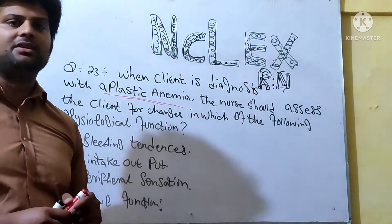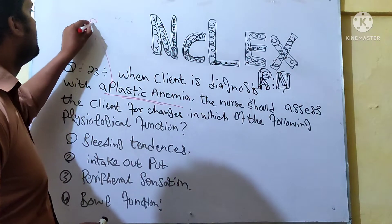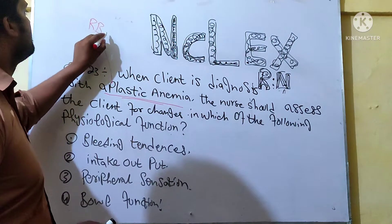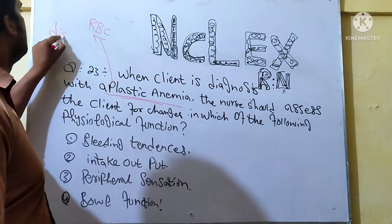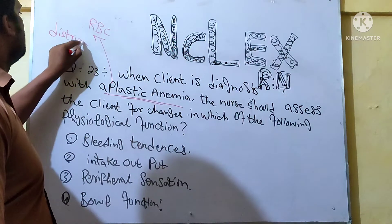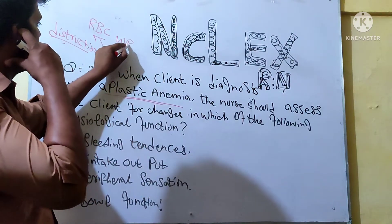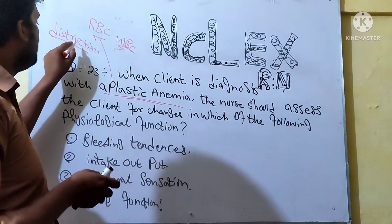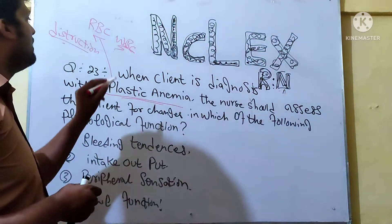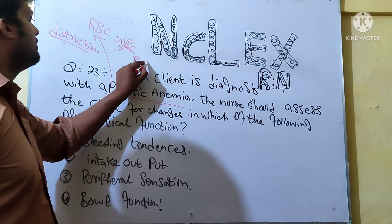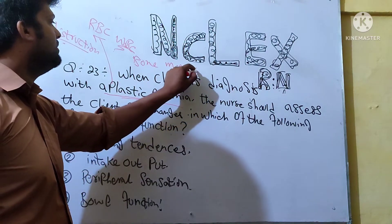In Aplastic Anemia, the RBC count is affected — there is destruction. Aplastic Anemia involves destruction of RBC and WBC. The bone marrow is not producing cells properly. RBC cells are normally produced in the bone marrow, but in Aplastic Anemia they are not produced in the bone marrow.